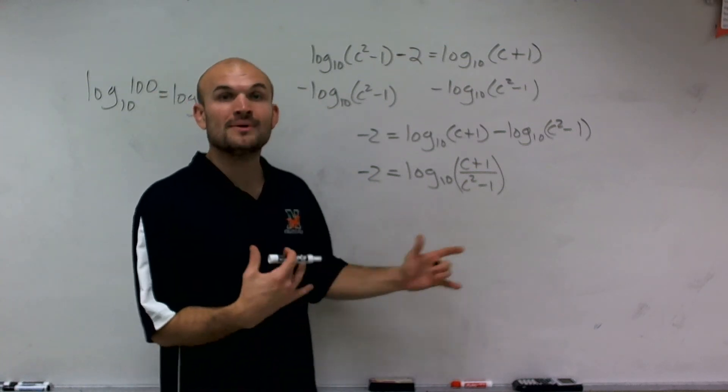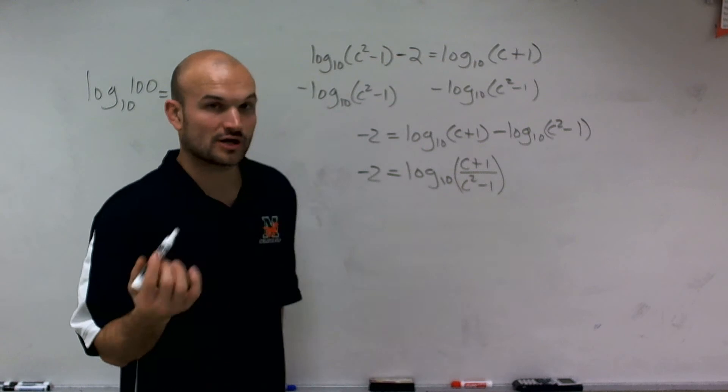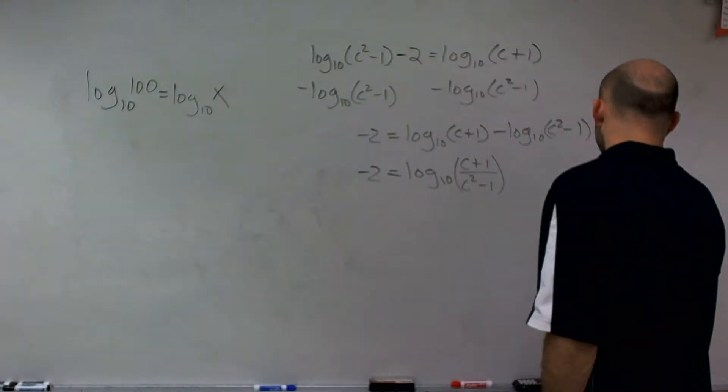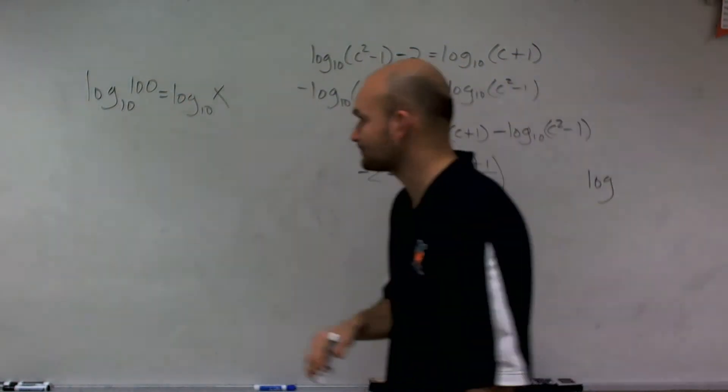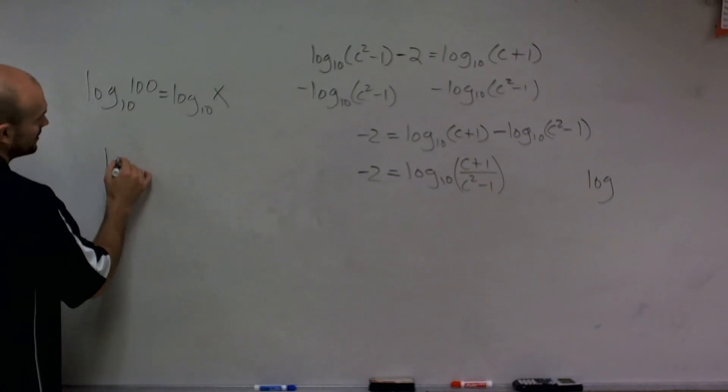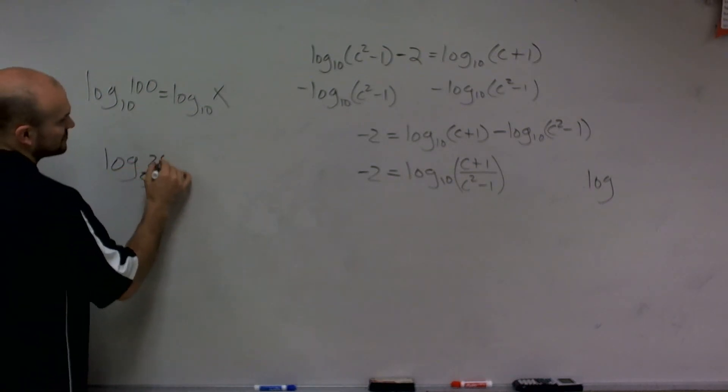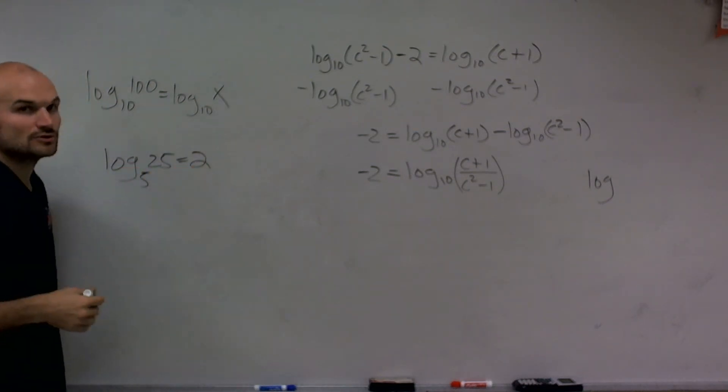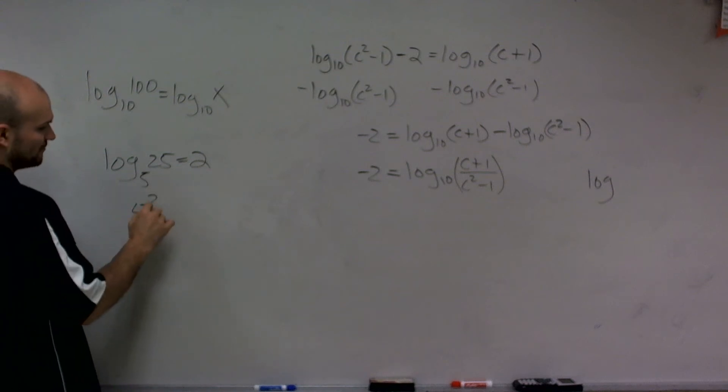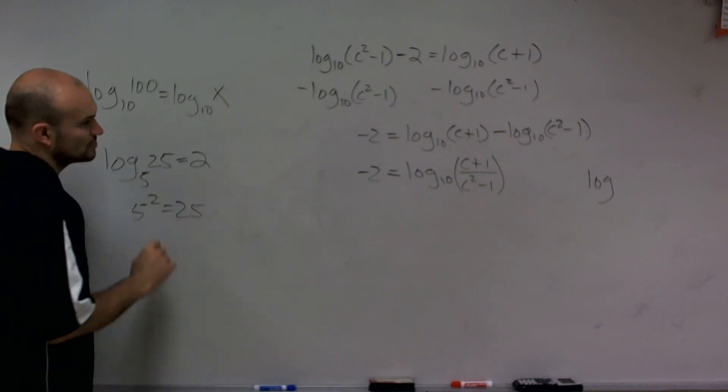I can take it from logarithmic form now to exponential form. So a quick little reminder, if I had a logarithm like log base 5 of 25, we know that answer is going to equal 2. To rewrite that in exponential form, it equals 5 squared equals 25.